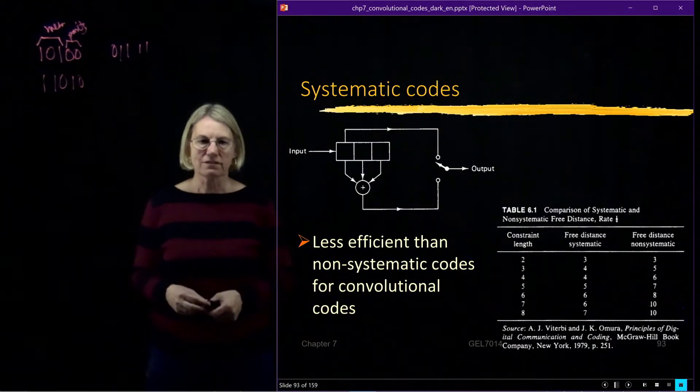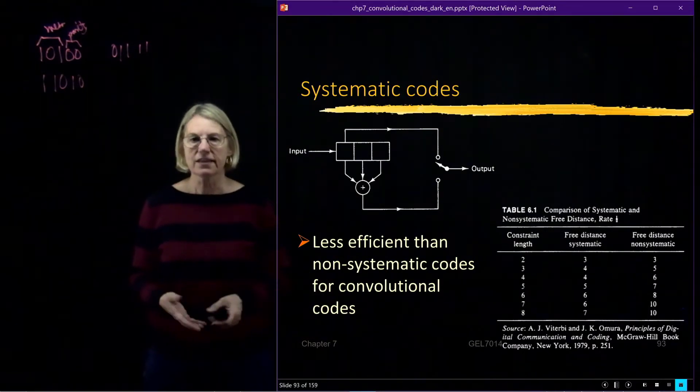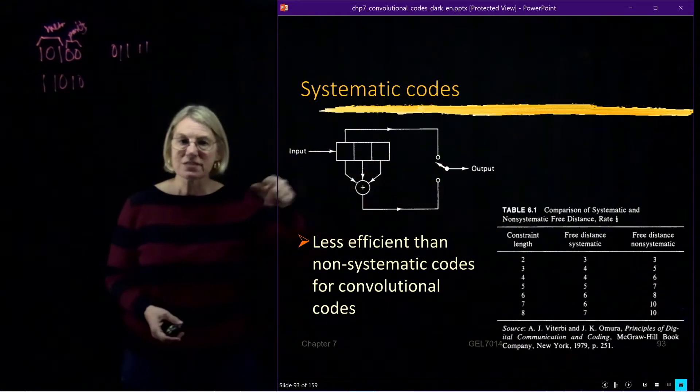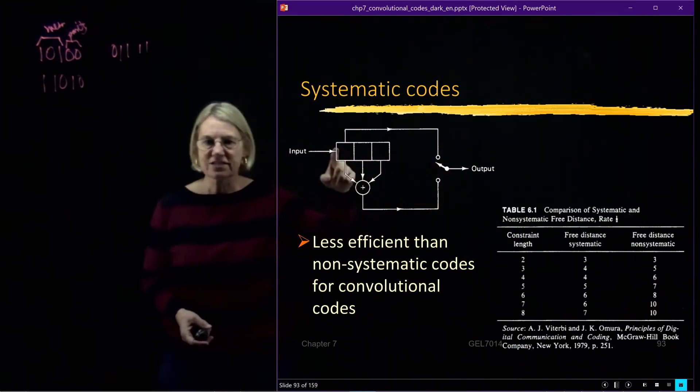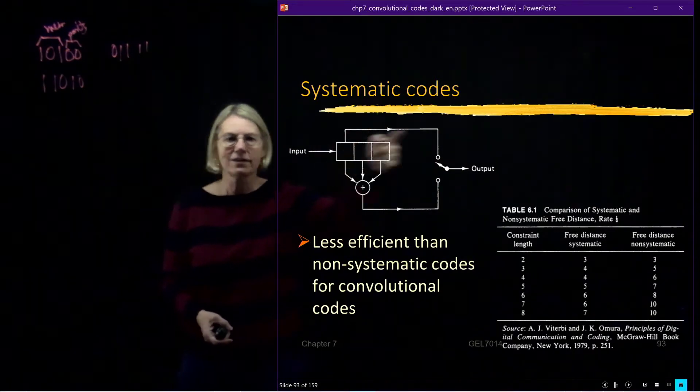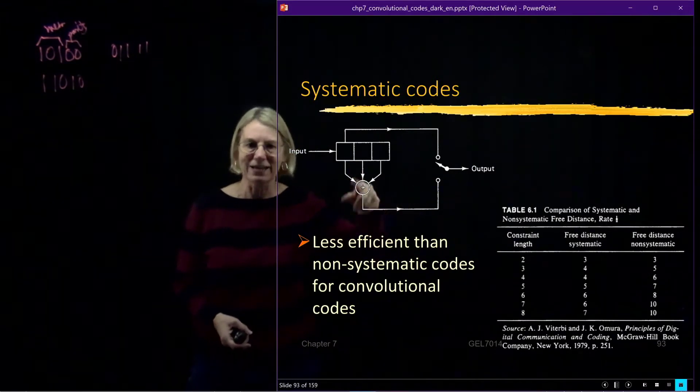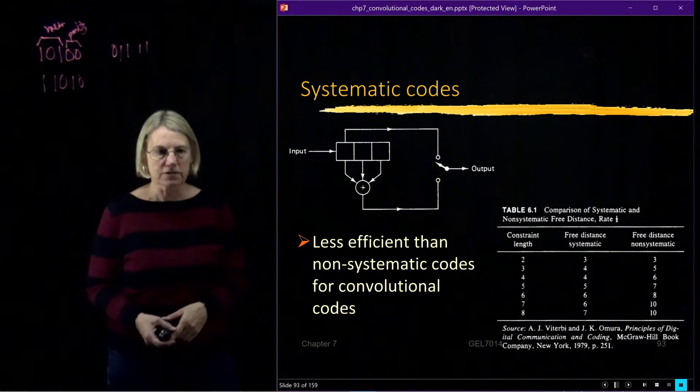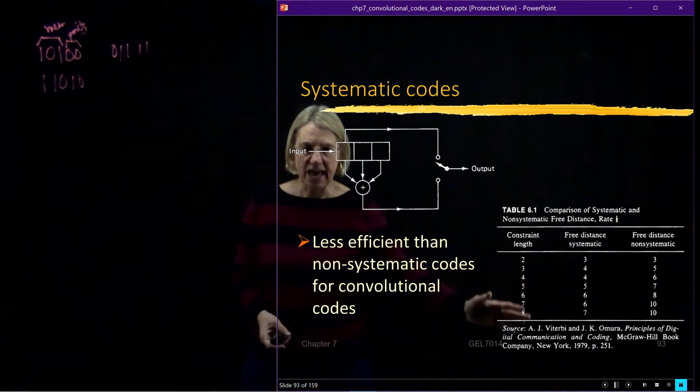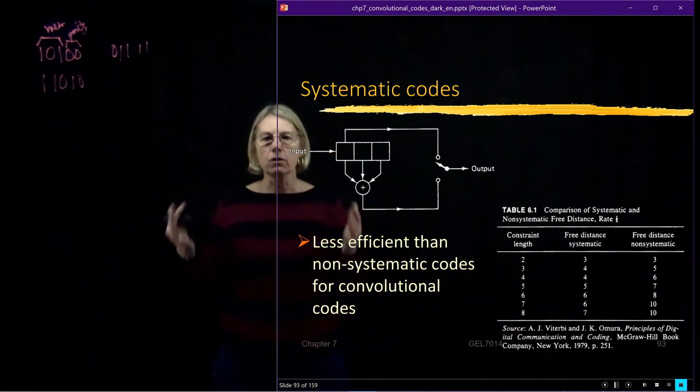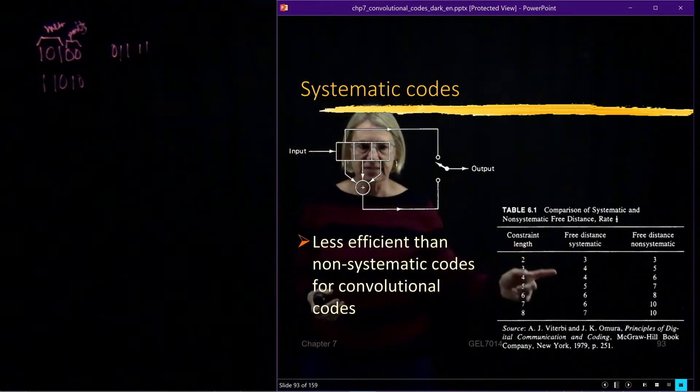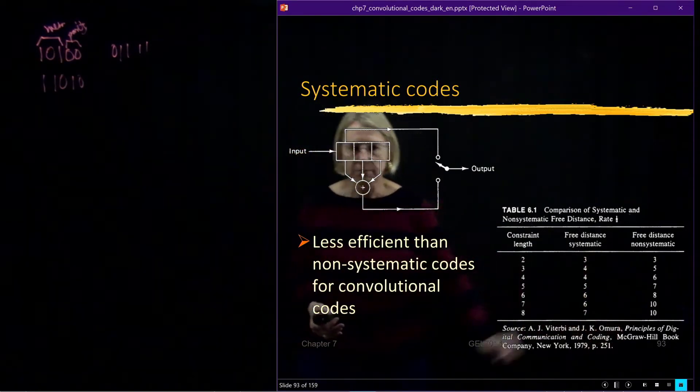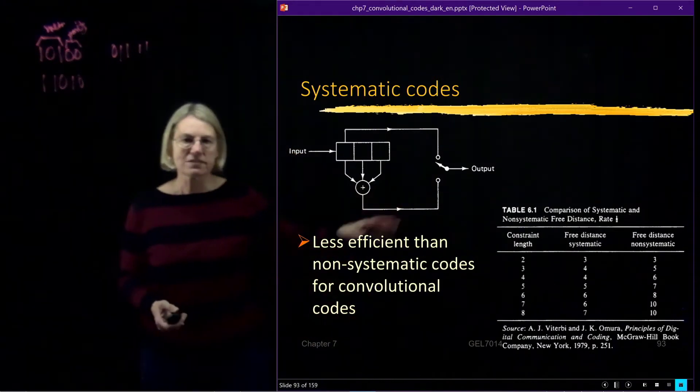I'll mention that systematic codes could exist. In the case of a systematic code, what would that look like in terms of our encoder implementation? So a systematic code would have one of the code bits, which is exactly no math, right? I just take the input and I make it my output. And then these become my parity bits or my added bits that are added. But like I said, these are less efficient than non-systematic codes for convolutional codes. And there is, for instance, for a given k, you can look through all of the systematic codes and find out what would be the best one and calculate what its distance is. And then you do the same thing when you no longer have the constraint that this has got to be systematic. And you can see that you can get a larger free distance with the non-systematic codes.